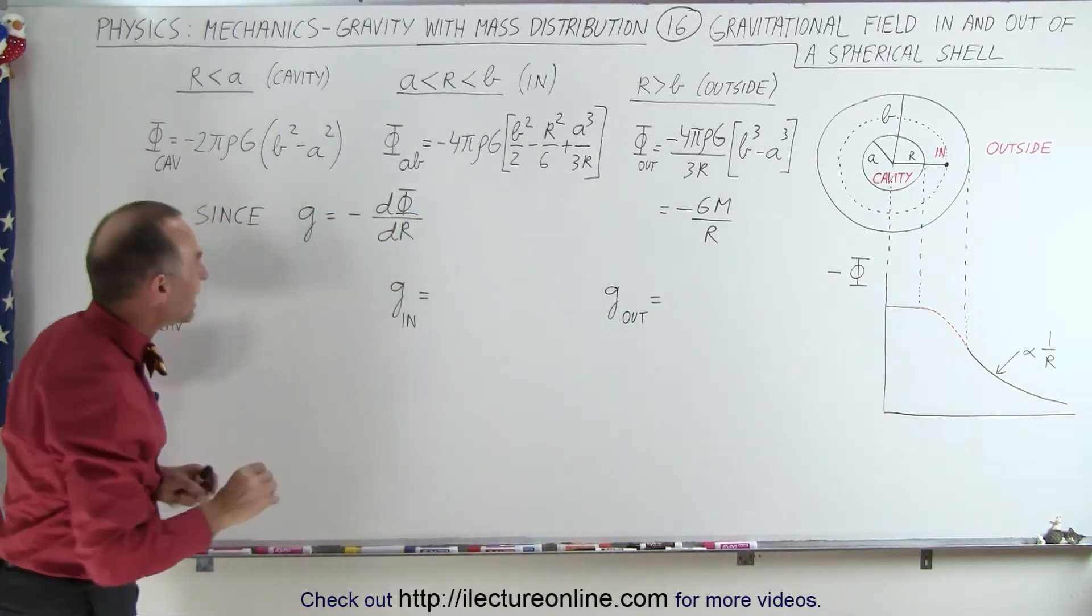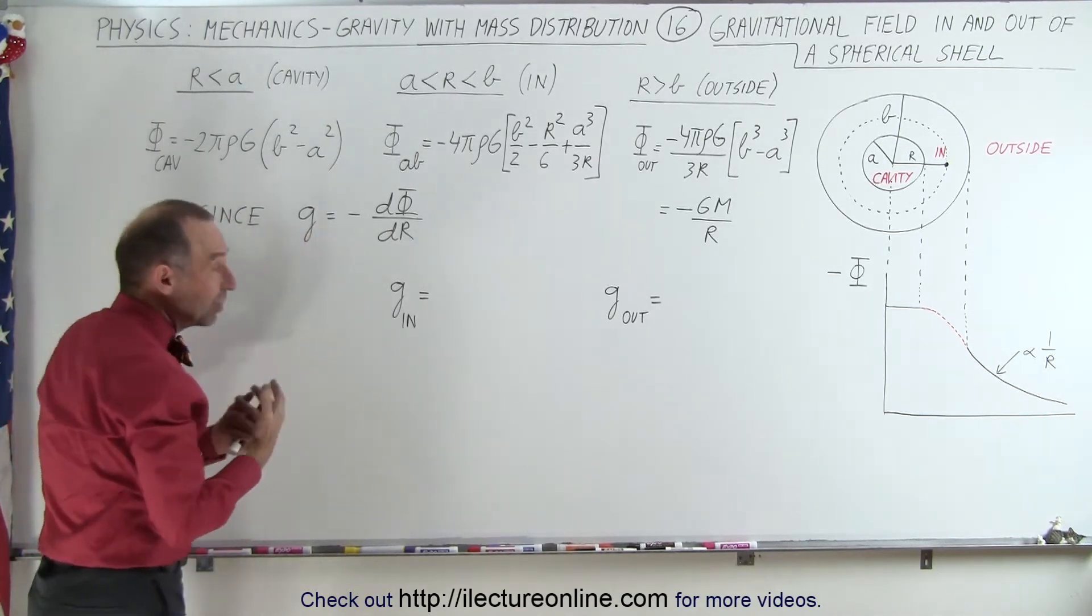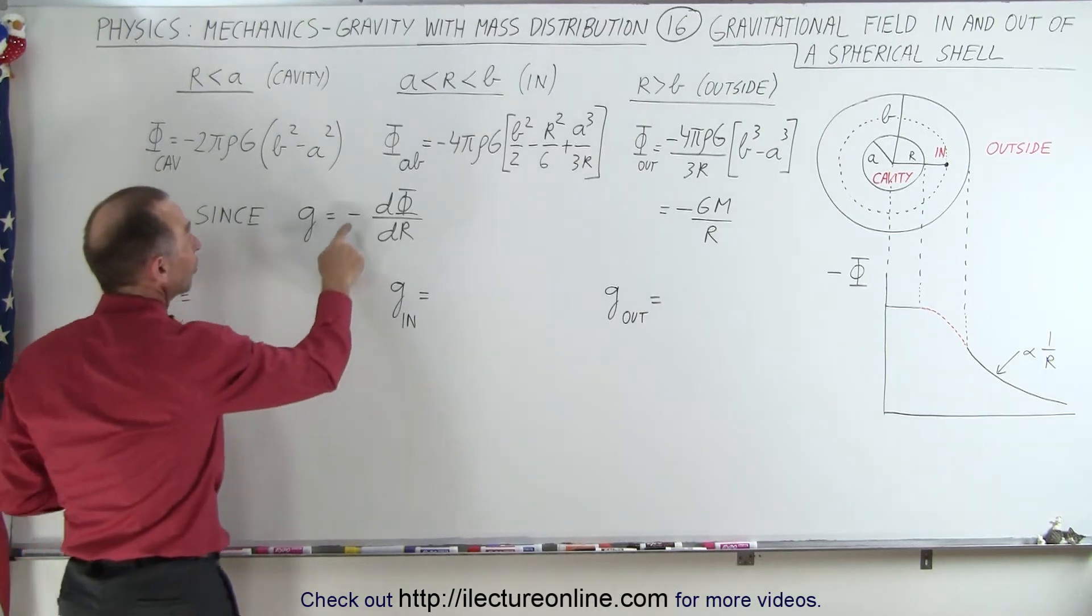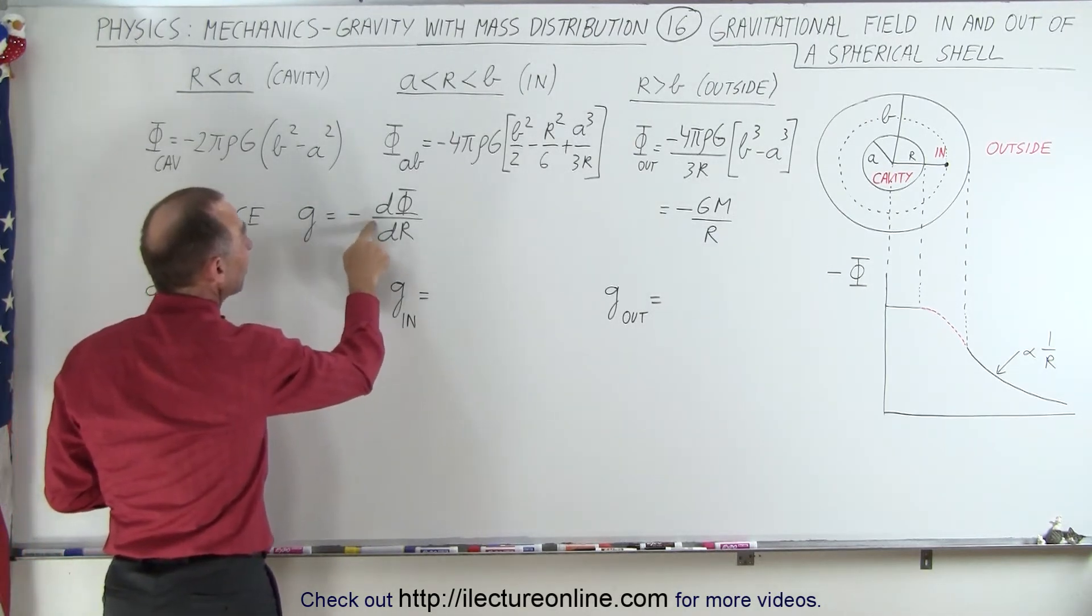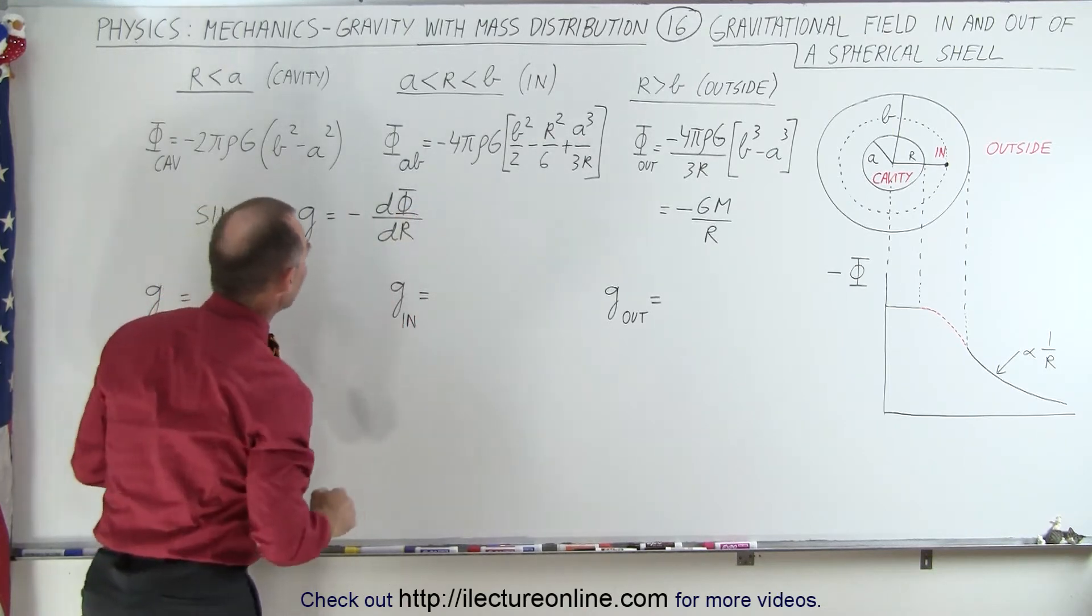Now we know that the equation to derive the gravitational field, which is equal to the gravitational acceleration of that field, is going to be equal to the negative of the derivative with respect to the radius, or the distance, of that gravitational potential.